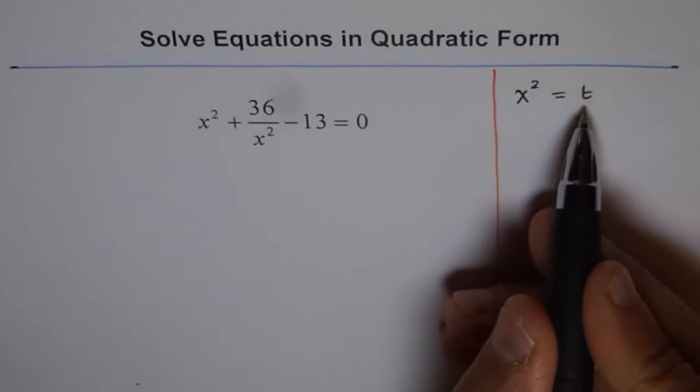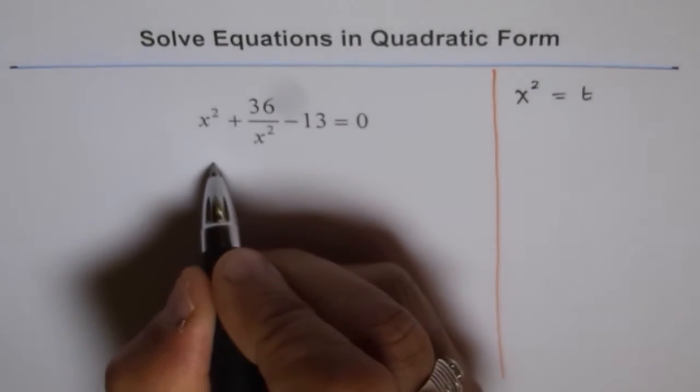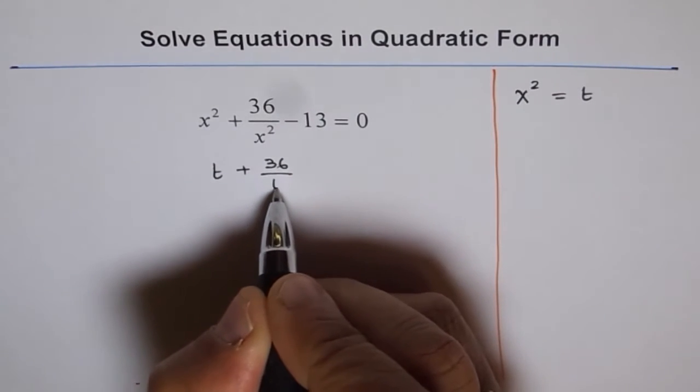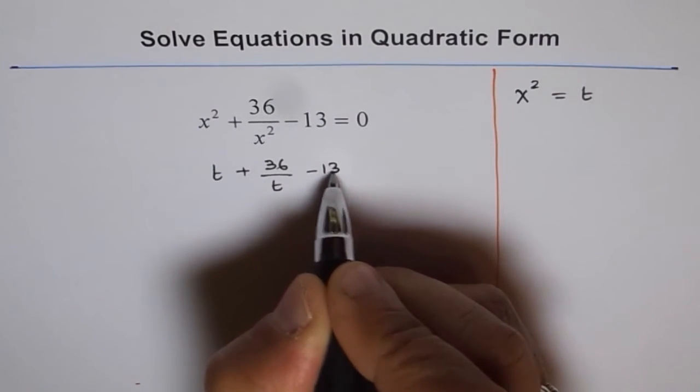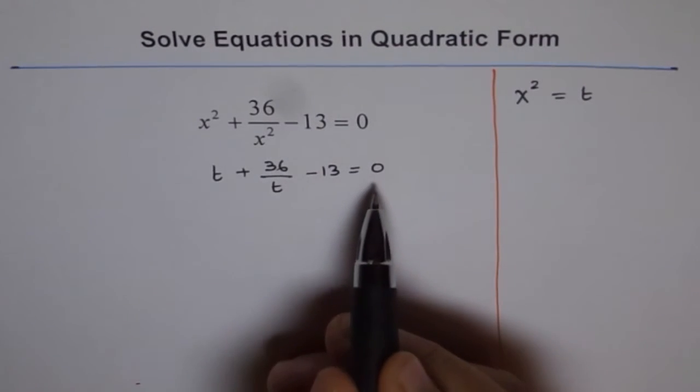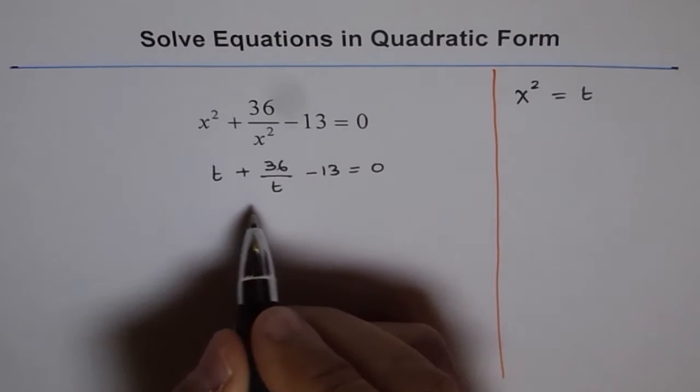So, if I do x squared equals t, then the equation gets transformed to t plus 36 over t minus 13 equals 0. Now, I can multiply both sides by t and see what results.